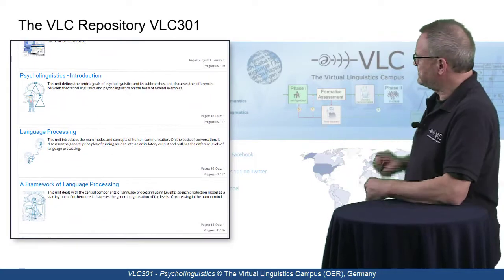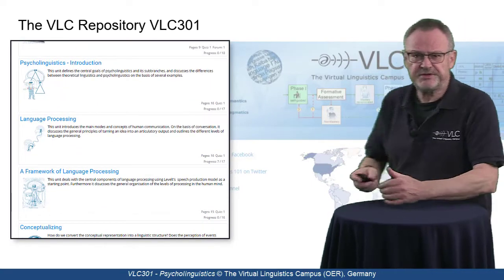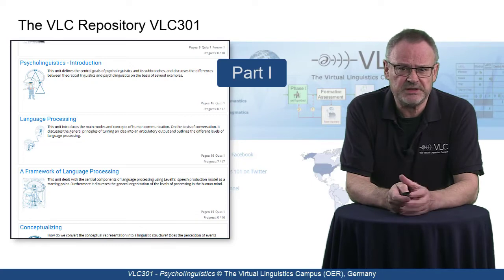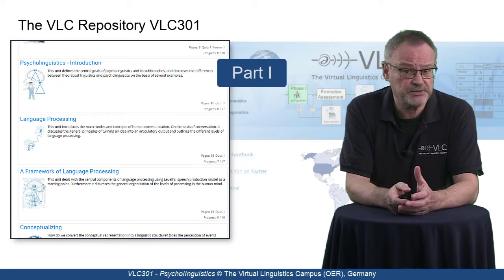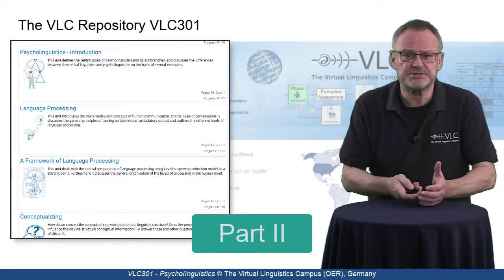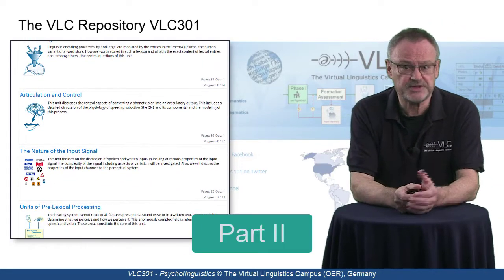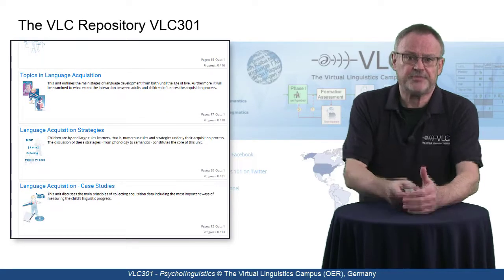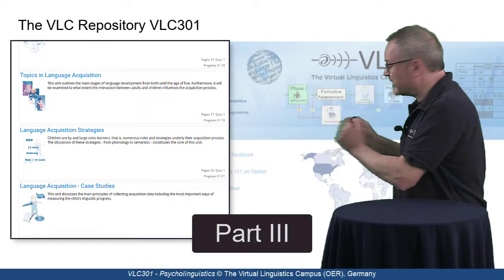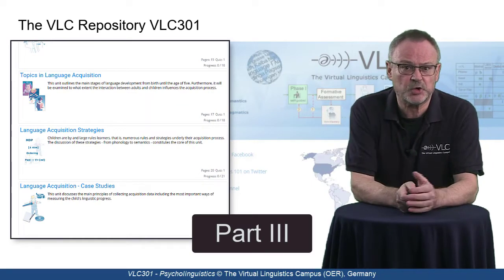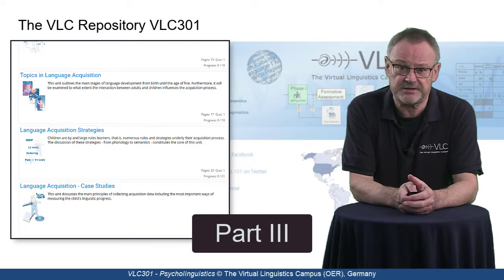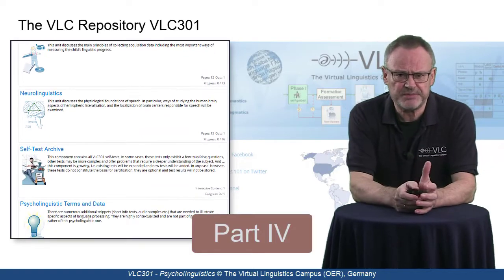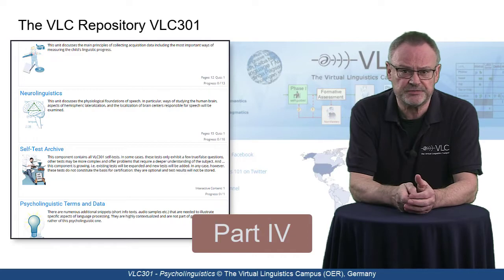Here is how we organize the content of VLC 301 for you. After an introduction to the branches of psycholinguistics and the main components of human communication, we will discuss the central aspects of language processing in part 2 — that is, from thought to articulation and vice versa. The third part is dedicated to language acquisition, that is, the question of how children acquire their mother tongue during the first years of their lives. Neurolinguistics — the discussion of how language is represented in the human brain — concludes VLC 301.